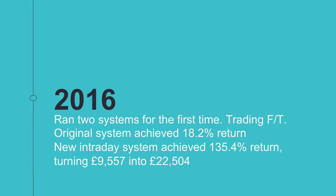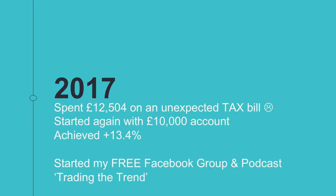In 2017 I had a rather unexpected tax bill where I had to pay £12,500 — HMRC required me to pay a year's tax in advance under a new rule I wasn't expecting. I had nowhere to take that but from my trading profits. So I started fresh with a £10K account in 2017 and achieved a 13.4% return on my end-of-day trading system. I wasn't consistently trading intraday in 2017 — it was more testing of different intraday systems than actually trading them.